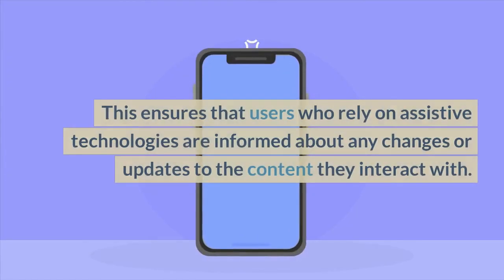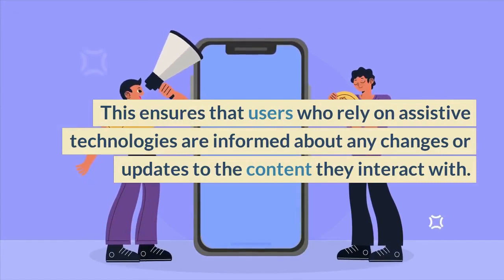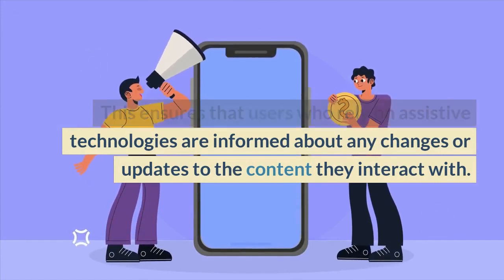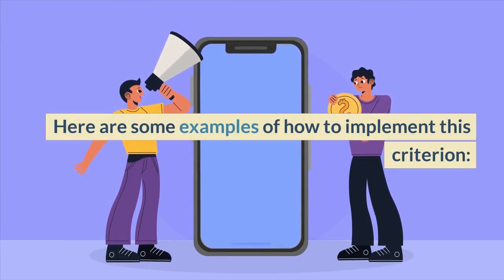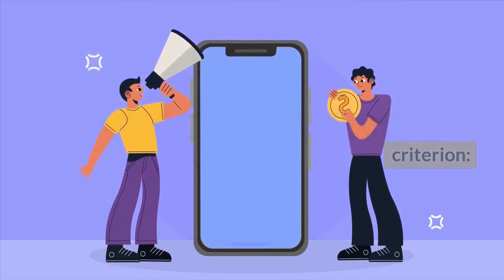This ensures that users who rely on assistive technologies are informed about any changes or updates to the content they interact with. Here are some examples of how to implement this criterion.